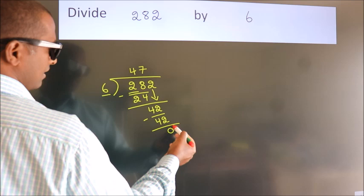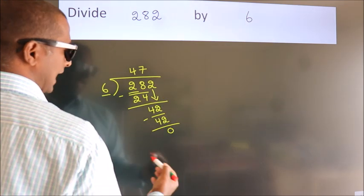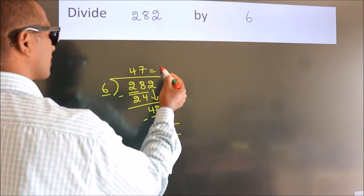After this, no more numbers to bring down. And we got remainder 0. So this is our quotient.